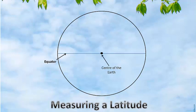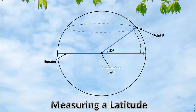Now let us take an angle of 50 degrees from the center of the earth along the equator to point P on the surface of the earth. If we rotate this angle along all such points on the surface...